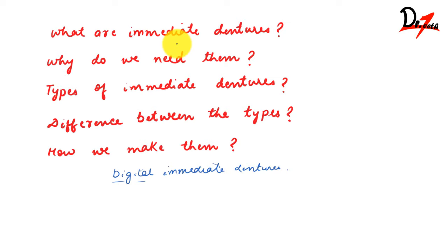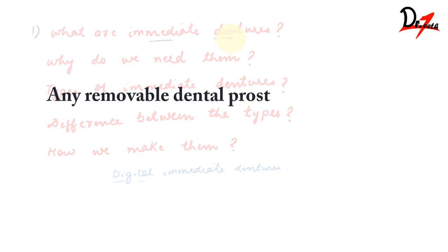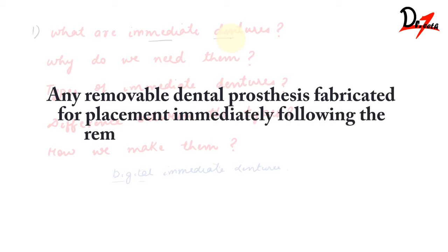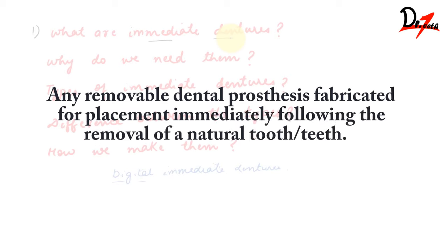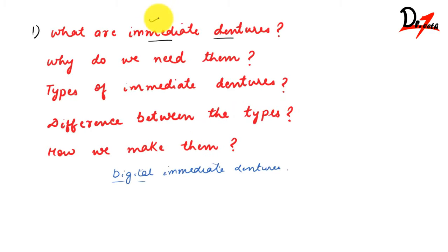So what are immediate dentures? As the name suggests, it is something we give the patient quickly. According to the Glossary of Prosthodontic Terms, it is a removable dental prosthesis fabricated for placement immediately following the removal of a natural tooth or teeth. We call them immediate dentures because we remove the teeth and at the same time give the denture to the patient.